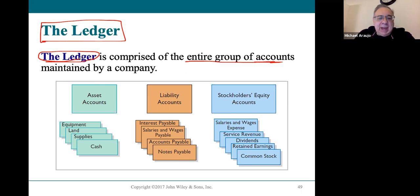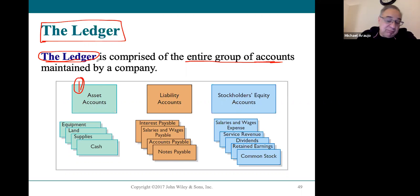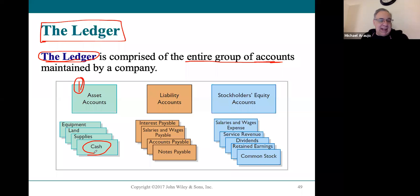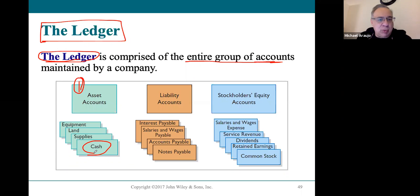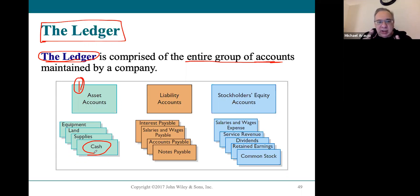Every company has a ledger, and ledgers have a certain organization. They're organized first and foremost like the classified balance sheet, so asset accounts are listed first. The very first account you would see is the cash account. In that section of the ledger, only the activity that affected cash would be shown — debits on the debit side, credits on the credit side. The ledger then gives us the balance in the account.